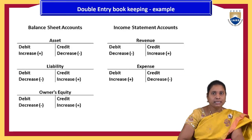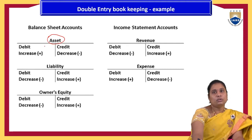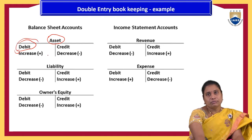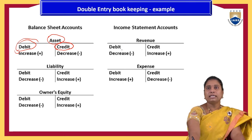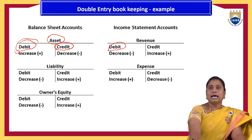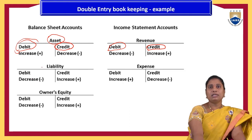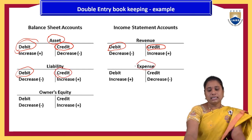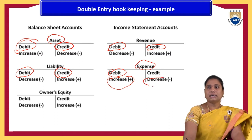For assets: when assets increase, cash is going out, so that is a debit; when assets decrease (sold), that is a credit. For revenue: when income is decreasing, that is a debit; when income is increasing, that is a credit. For liabilities: when liabilities decrease, that is a debit; when liabilities increase (money coming into the organization), that is a credit. For expenses: when expenses increase (going out of the organization), that is a debit; when expenses decrease, that is a credit.